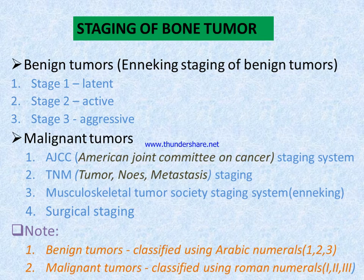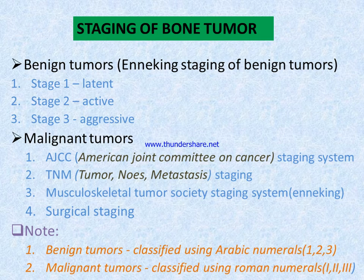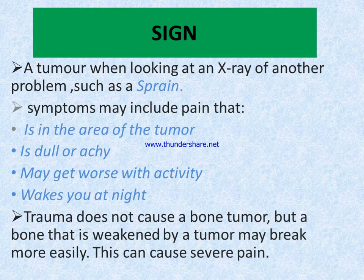The malignant staging systems include: the AJCC (American Joint Committee on Cancer) staging system; the TNM staging system (Tumor, Node, Metastasis); the Musculoskeletal Tumor Society staging system using the Enneking staging system; and surgical staging. An important point: benign tumors are classified using Arabic numerals, and malignant tumors are classified using Roman numerals.